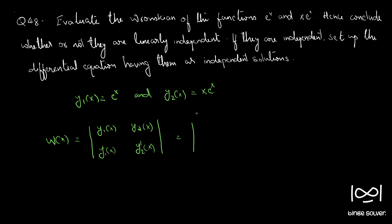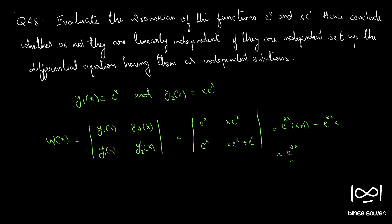So for y1 = e^x and y2 = xe^x: the derivative of e^x is e^x itself, and the derivative of xe^x is xe^x + e^x. Computing the Wronskian determinant, we get e^x · (xe^x + e^x) − xe^x · e^x, which simplifies to e^(2x)(x+1) − xe^(2x) = e^(2x).